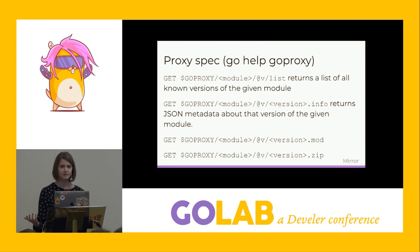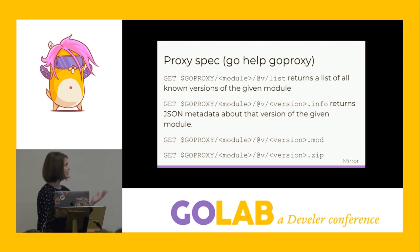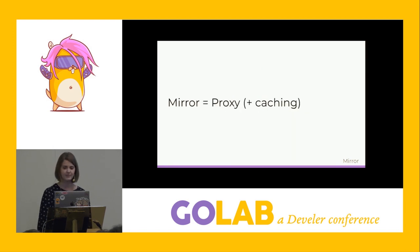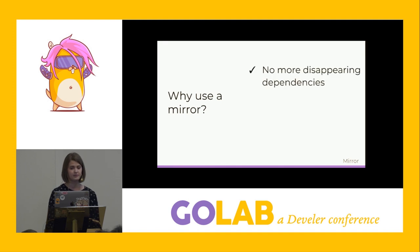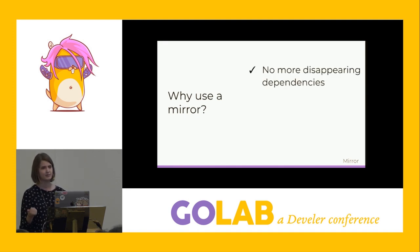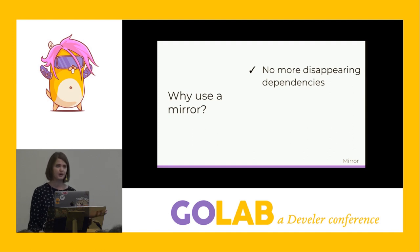Any server that implements the module proxy specification can be used by the go command. This specification is given by running 'go help goproxy'. It has the list endpoint for getting versions, the info endpoint for JSON metadata, the mod file for dependency resolution, and the zip endpoint for the full source code. A mirror is a special type of proxy that caches metadata and source code in its own storage system to re-serve to clients. This solves our concern about disappearing dependencies — if source becomes unavailable, the mirror has a copy.